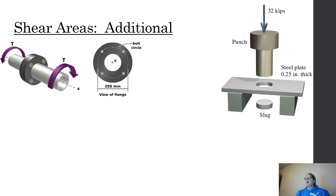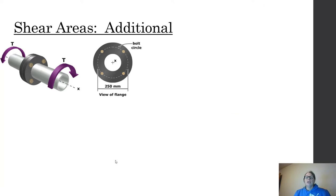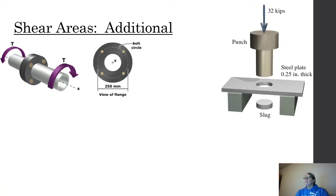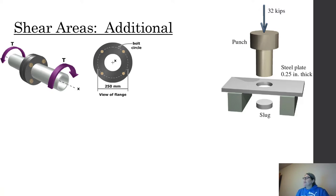Looking at additional area examples: if I'm in torsion and have two collars bolted together with four bolts, the twisting causes shear across the face of those bolts. The resisting area is four times the area of one bolt. Another example is the punch and slug — putting a hole in a leather belt. I'm pushing the punch down, and the shear area is that outer perimeter circumference times the thickness of the slug.